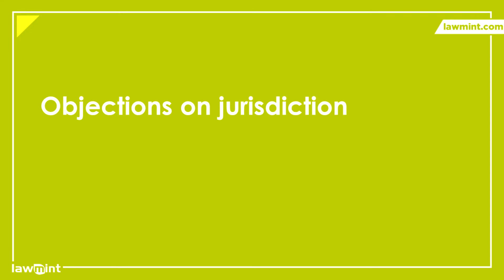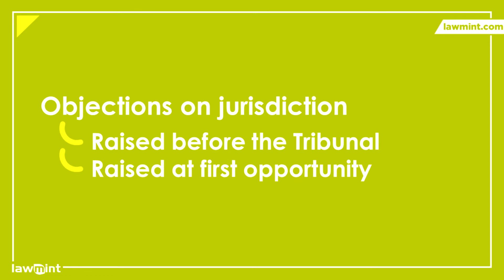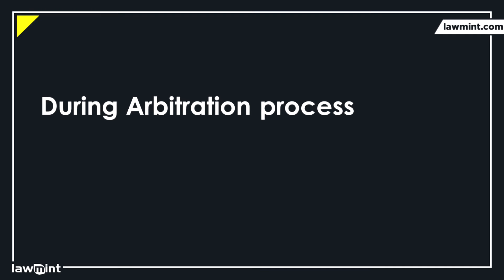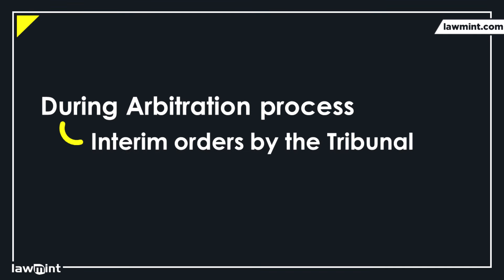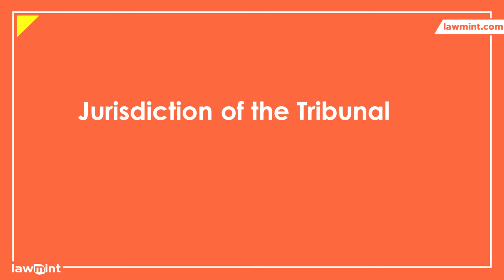If the parties object to the jurisdiction of the tribunal, such objections also have to be raised before the tribunal itself. Any such objections must be raised at the first available opportunity, which will be the first defense statement in case of objection as to jurisdiction. In case of any overstepping of the scope of the arbitration, such objections must be filed immediately after such a deviation has occurred. As soon as the arbitration process commences, the tribunal can issue interim orders to protect the subject matter of the dispute, such as stopping any sale, transfer, payments, or refunds. To summarize, the jurisdiction of the tribunal is governed primarily by the scope of the arbitration agreement and within the powers allowed by the act.